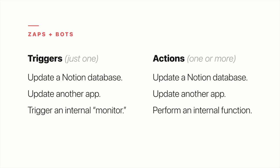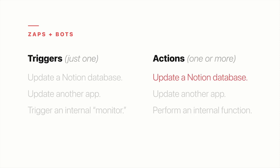Almost always, actions are going to reference information provided by the trigger — such as the ID of the page that was updated, or a personal trait of a contact that was added. In Notion, your actions will typically be adding or updating database items. So if your trigger is an updated Salesforce contact, you can update the same contact in your contacts database in Notion. And if your trigger is a song favorited in Spotify, you can add that song to a songs database in Notion.